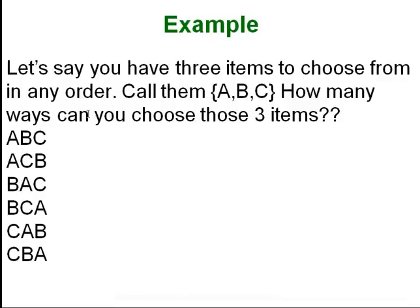Here is an example. Let's say you have three items to choose from — we can call them A, B, and C. Think of it as three different trophies A, B, and C, and you want to decide how to arrange them on your mantel. So order matters. How many ways can you do that?